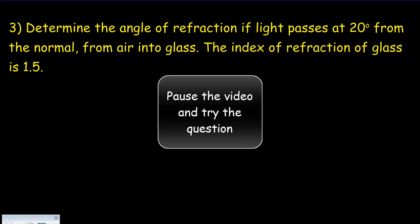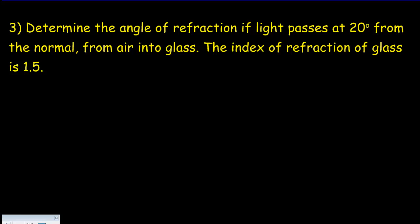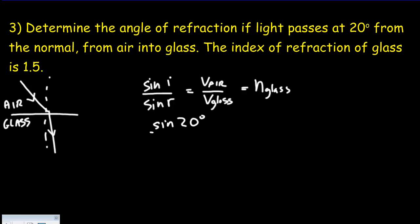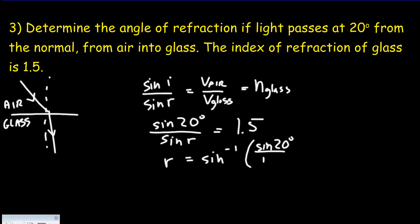In the third problem, we're going from air into glass — the situation needed for an absolute (materials) index of refraction. We write sine i / sine r = v_air / v_glass, which equals n_glass. So sine 20° / sine r = 1.5, meaning r = arcsin(sin 20° / 1.5), giving an angle of refraction of 13.2 degrees.